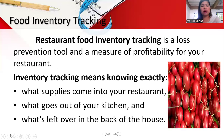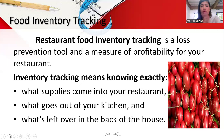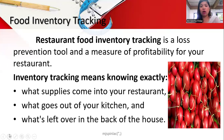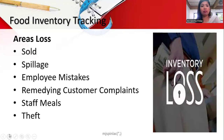Restaurant inventory is a loss prevention measure and a measure of profitability for your business. Inventory covers what supplies are coming into our restaurant, what goes out of our kitchen, and what's left in our kitchen. We have initial stocks in our kitchen, materials that go out, and how many materials are left at the end of the day.